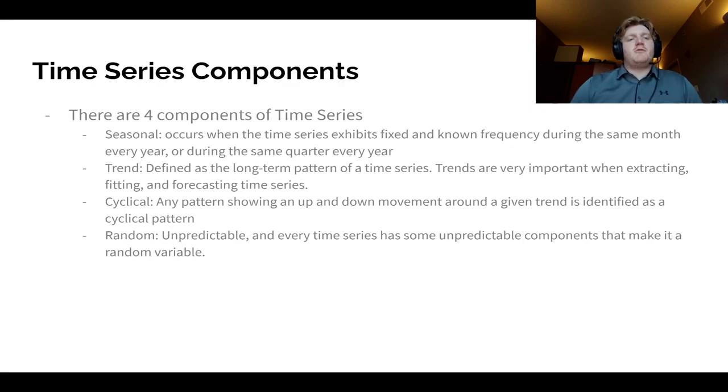So here is some of the time series components. There are four components of time series. We have seasonal, and this occurs when the time series exhibits fixed and known frequency during the same month every year or during the same quarter every year. And then we also have the trend. This is defined as the long-term pattern of a time series. Trends are very important when extracting, fitting, and forecasting time series. We also have cyclical. Any pattern showing an up and down movement around a given trend is identified as a cyclical pattern. And then we also have random. This is unpredictable. Every time series has some unpredictable components that make it a random variable.